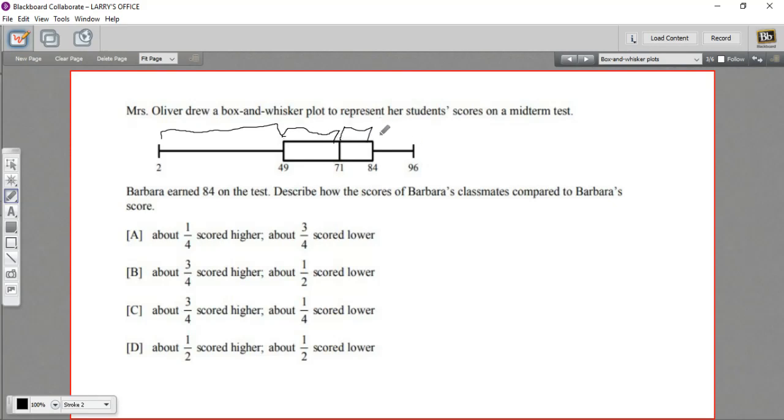and the highest fourth scored in that quartile. And the median was 71. It says Barbara earned 84 on the test. So right up here at the division between the third and fourth quartile. So that's pretty good.